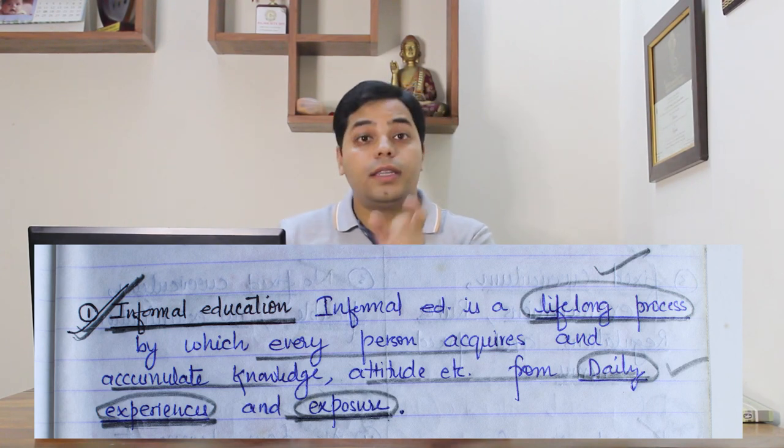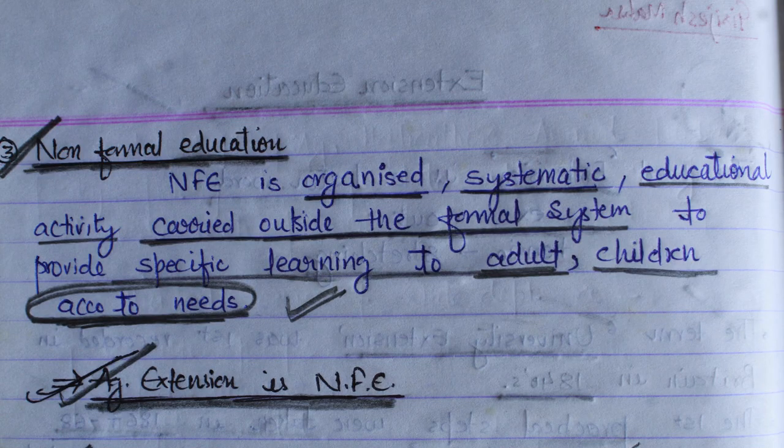Non-formal education is organized, systematic educational activity carried out outside the four walls of the formal system — outside school and college — targeting adults and children according to their needs. The classic example is adult education programs. That is why extension comes under non-formal education. Please note: extension is neither formal nor informal; extension is a non-formal education.